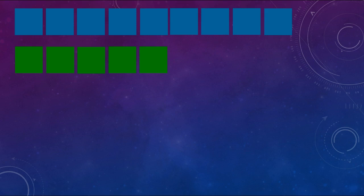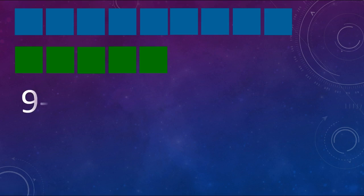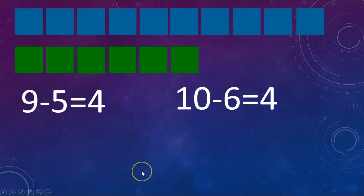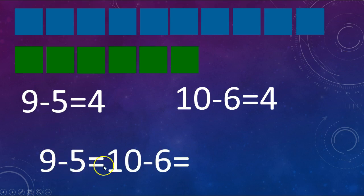Can you tell me the number sentence for this one? Find the number of blue squares, the number of green squares, and what the difference is. Go ahead and write that down. Did you say 9 minus 5 equals 4? Good job. Now if I were to add one more blue one and one more green one, what is our new number sentence? Did you say 10 minus 6 equals 4? Good job. So: 9 minus 5 equals 10 minus 6 equals 4.